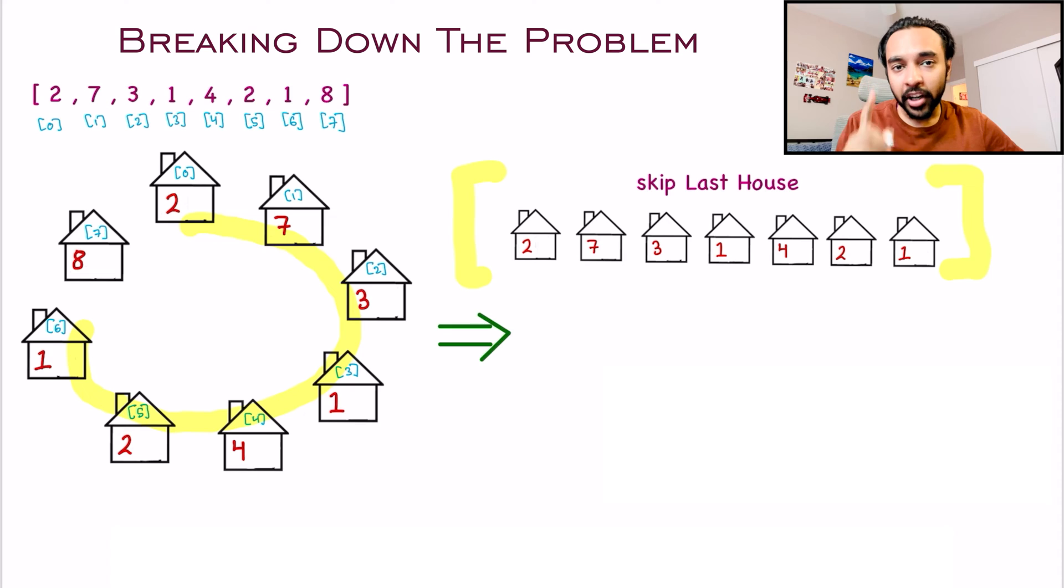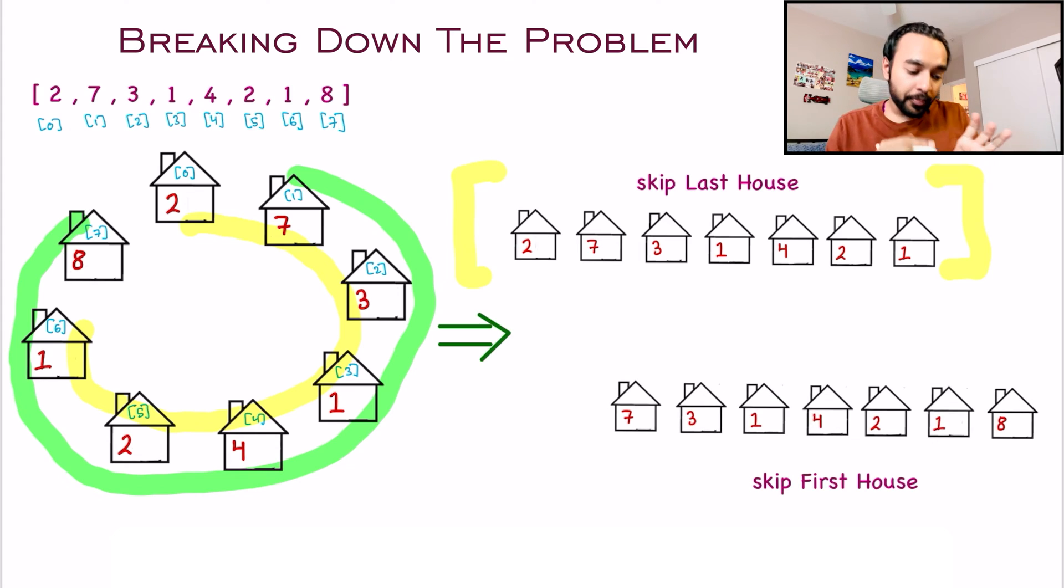However, there is one other way you can go about robbing these houses. You can start from the last house and then go all the way to the second house. And this will be in a reverse direction. This time, you will be leaving out the first house. So this way, you can form another array in which you are skipping the first house. So these are the only two ways which we can rob. Either you skip the last house or you skip the first house. There is no other way.